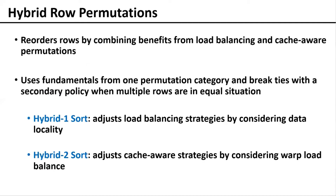Finally, hybrid policies combine benefits from both permutation categories. They start with one approach and break ties with a secondary approach. For instance, when multiple rows are equal in terms of load balance, data locality principles are used to guide the rest of the sort.